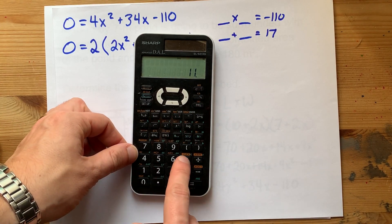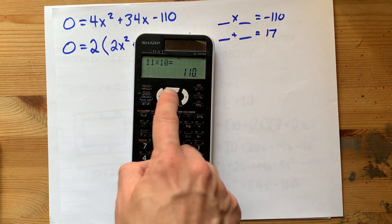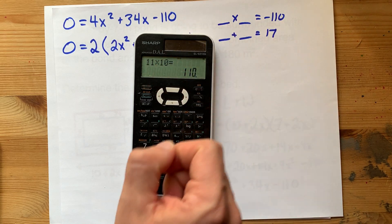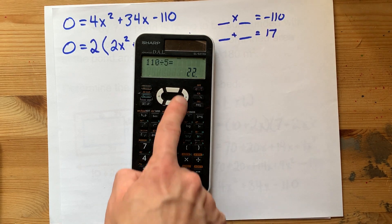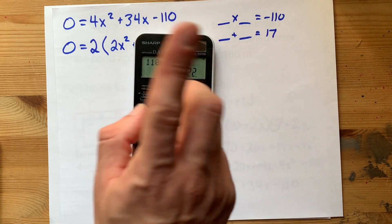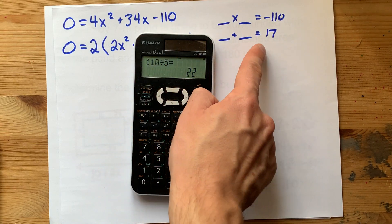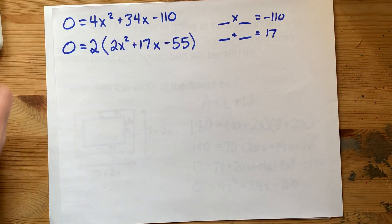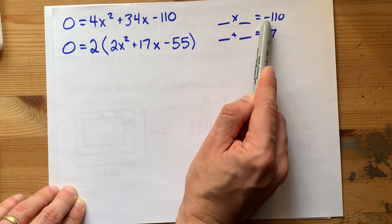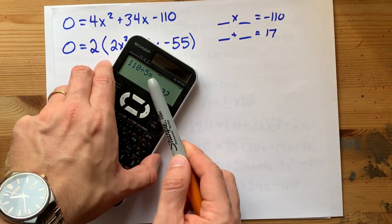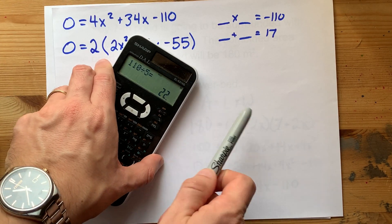I know 11 and 10 work, but 11 and 10 don't combine to make 17. 110 divided by 5 is 22. 22 and 5 differ by 17. I think we're on to something here.